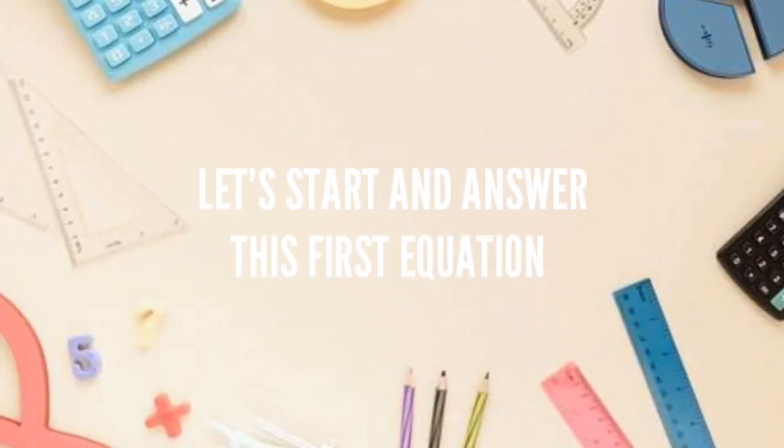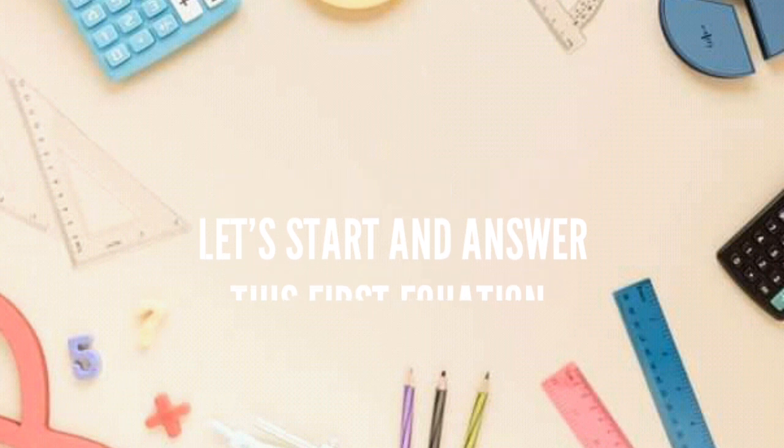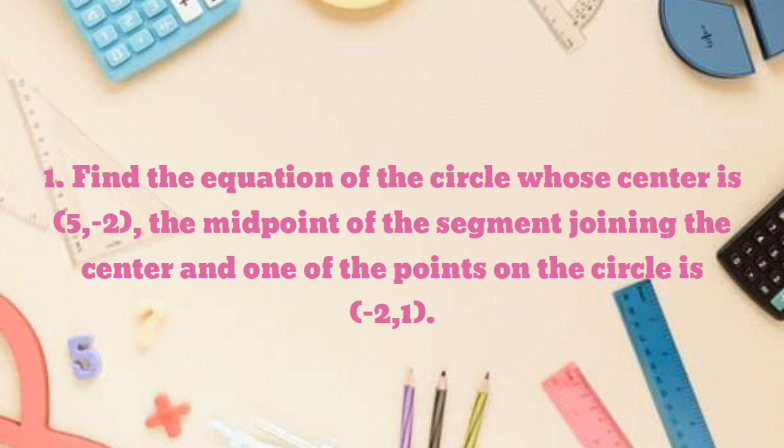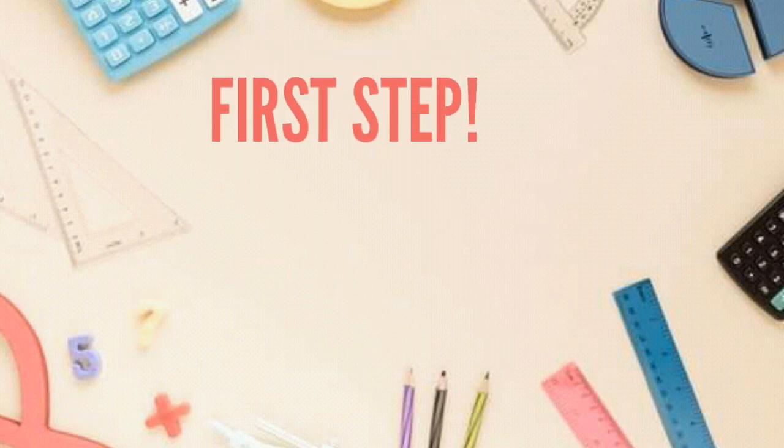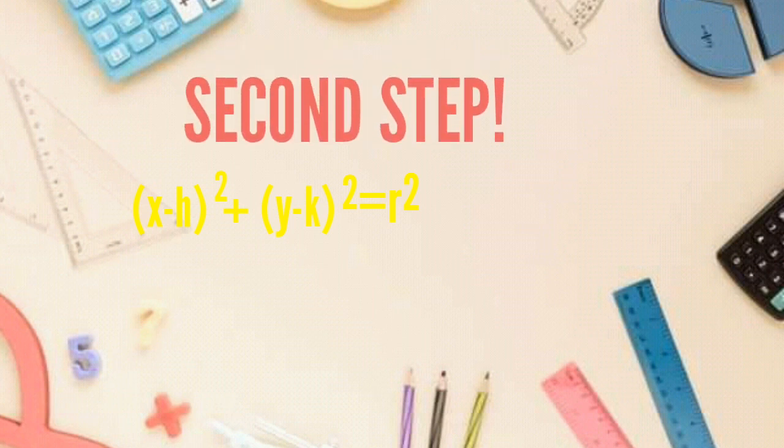Let's start and answer this first equation. Finding the equation of the circle whose center is (5, -2), the midpoint of the segment joining the center and one of the points on the circle is (-2, 1). First step is use the equation of the circle which is (x - h)² plus (y - k)² equals r², and then substitute the value of h and k which is 5 and -2.